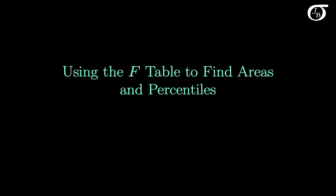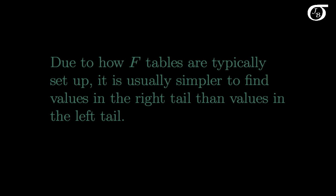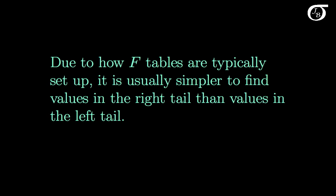Let's look into using the F table to find areas and percentiles. Due to how these F tables are typically set up, it is usually a little easier to find values in the right tail of the distribution than values in the left tail. So first we're going to look at finding values in the right tail of the distribution, and then we're going to look at the left tail methods.